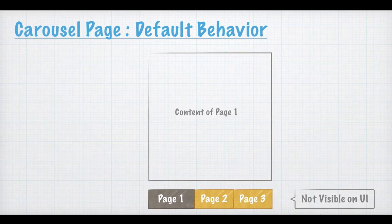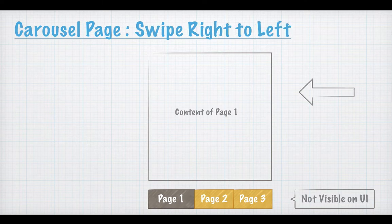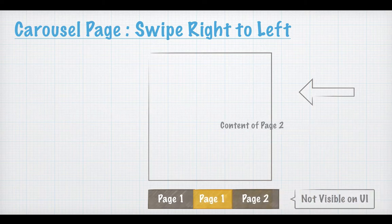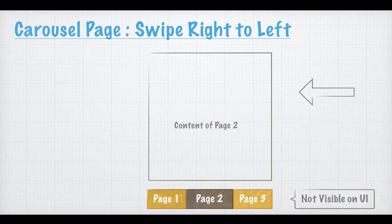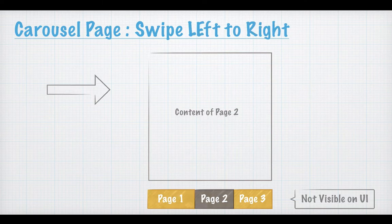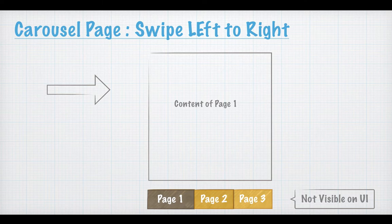The default behavior of the carousel page is that you have a list of pages behind the scenes which are not visible, and you only see one page at a time on your screen. If you swipe from right to left, the previous page goes away and the new content of another page comes into the visible area. If you swipe from left to right, the same thing happens in reverse — the content of the page on the left comes onto the screen.